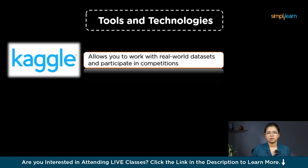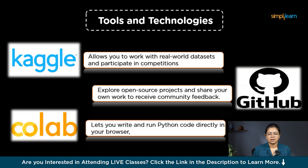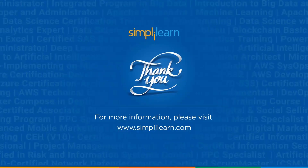To boost your data science learning, try these additional tools and resources. Number one: Kaggle — this site lets you work with real-world datasets and join competitions, a great way to practice your skills. Next, GitHub — explore open-source projects and share your own work to get community feedback. And Google Colab — this cloud-based tool lets you write and run Python code directly in your browser without any setup. With this roadmap and these resources, you'll be well on your way to becoming a data scientist.